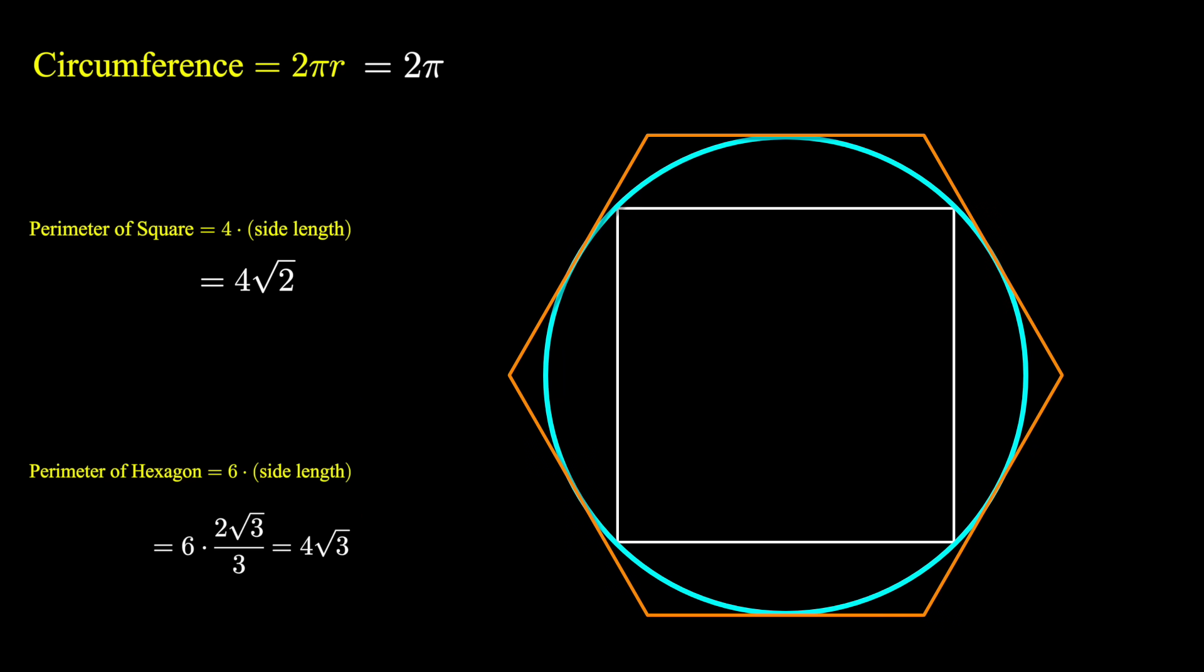The thing to notice is that the hexagon is outside the circle, the square is inside the circle, and the circle is in between the hexagon and the square. So when it comes to their perimeters, it should follow the same order.